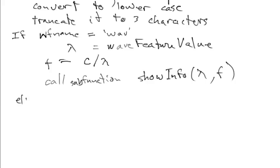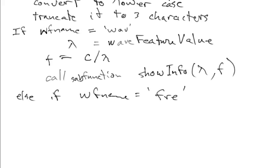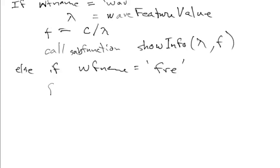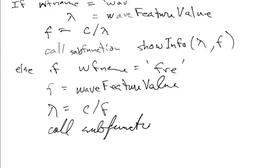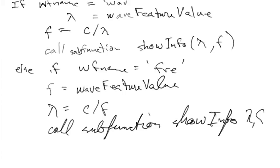Else-if: if wf_name equals 'FRE' by that point — it's the first three non-blank sequential characters — then in this case, frequency = wave_feature_value because that's what's stored in there, and wavelength = c/f. Then call the subfunction: show_info(lambda, f). That ends the function.